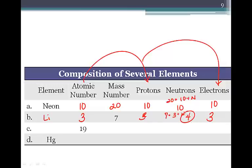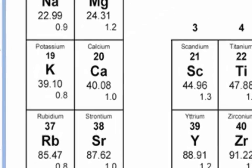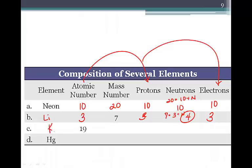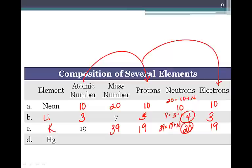For atomic number nineteen, the element is potassium. It has an atomic mass of 39.10, giving a mass number of thirty-nine. Since the atomic number equals the number of protons and electrons, potassium has nineteen protons and nineteen electrons. Thirty-nine equals nineteen plus the number of neutrons, so potassium has twenty neutrons.